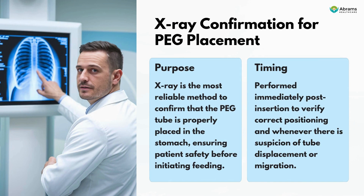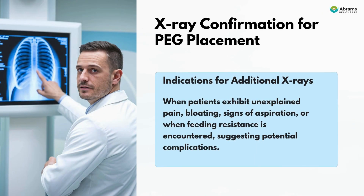X-ray confirmation for PEG placement: x-ray is the most reliable method to confirm that the PEG tube is properly placed in the stomach, ensuring patient safety before initiating feeding. It is performed immediately post-insertion to verify correct positioning, and whenever there is suspicion of tube displacement or migration. Additional x-rays are indicated when patients exhibit unexplained pain, bloating, signs of aspiration, or feeding resistance suggesting potential complications.